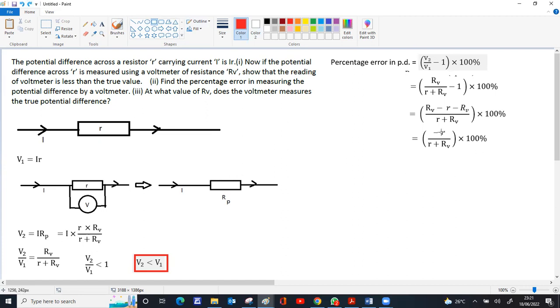This negative sign itself shows the measured value is less. That's the percentage error in the voltmeter. Now, for the voltmeter to show v2 equal to v1, we have v2 by v1 equals rv by r plus rv. If we divide both numerator and denominator by rv, rv by rv equals 1, and we get 1 over r by rv plus 1.